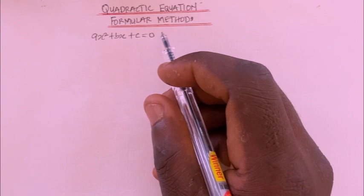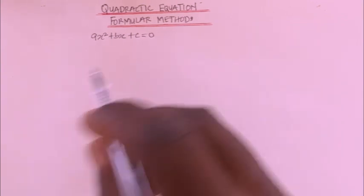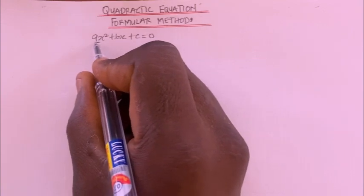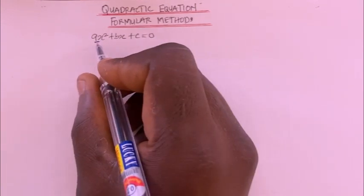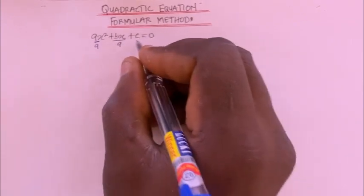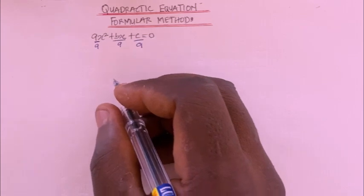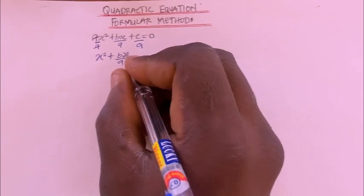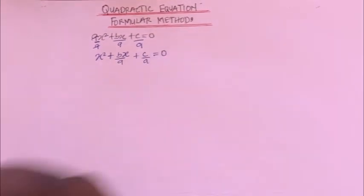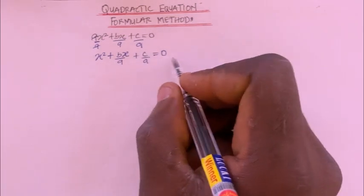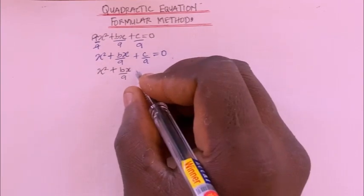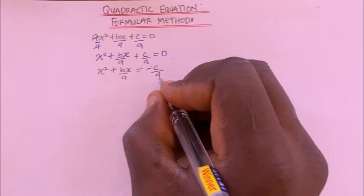To derive the quadratic formula, we're going to use the completing the square method. First, I'm going to divide all terms in this expression by the coefficient a. Dividing through by a gives us x² + (b/a)x + c/a = 0. Then I'll bring the constant term to the right side, giving x² + (b/a)x = -c/a.